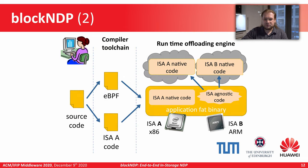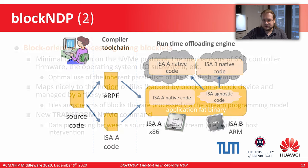This figure illustrates the workflow of the front-end of Block NDP where a common source code is compiled in the usual way into the native ISA of the host CPU and partially into eBPF. Both executable forms are stored in a single FAT binary and the intermediate eBPF code can then be JIT-compiled either to the host CPU ISA or to the SSD controller ISA as needed.